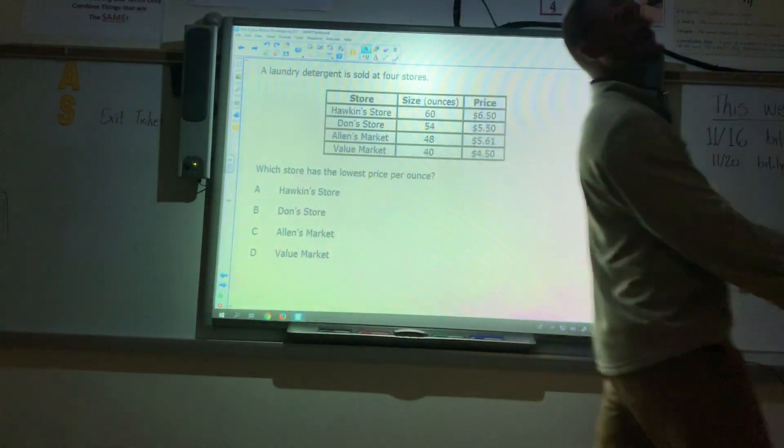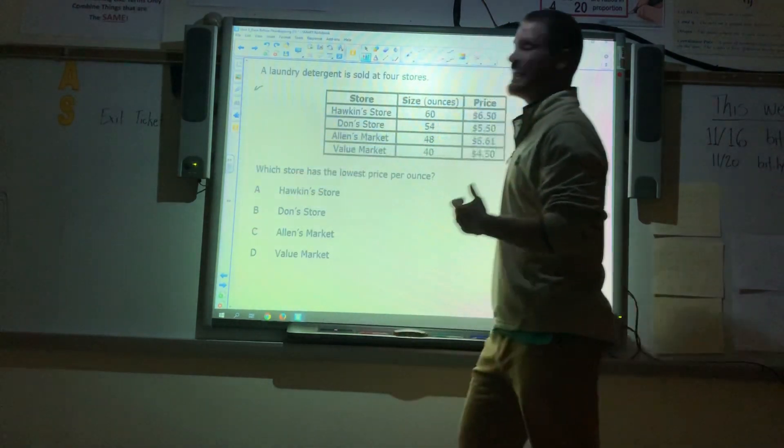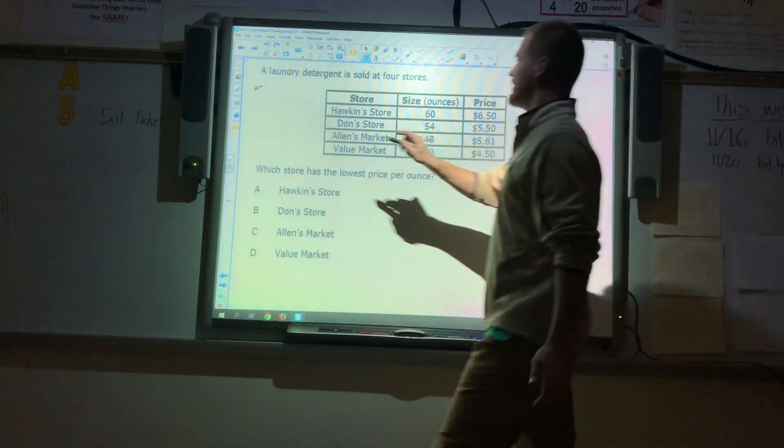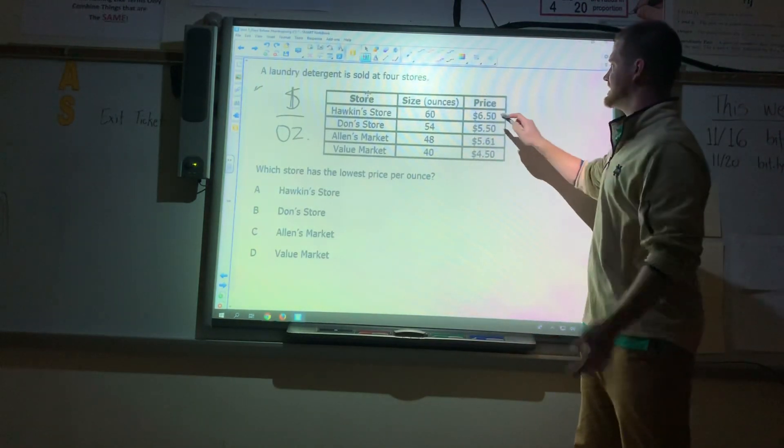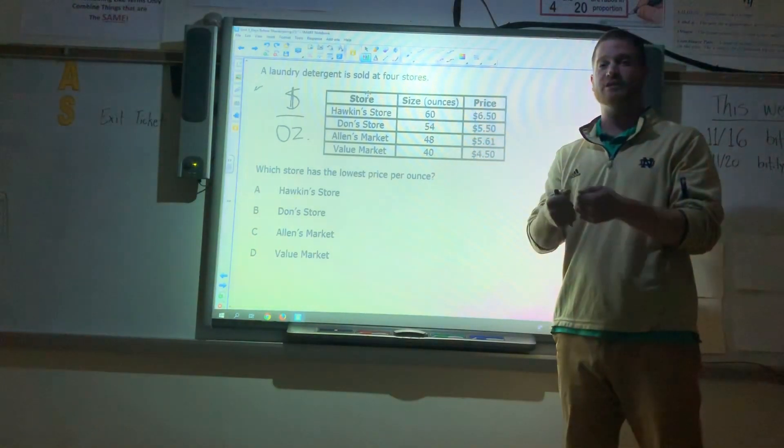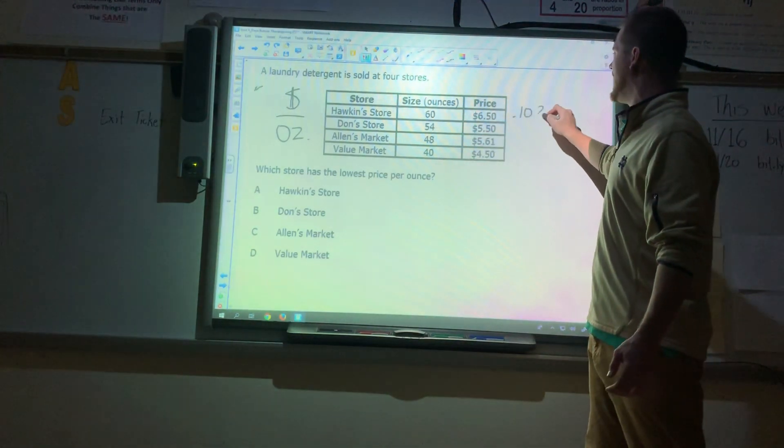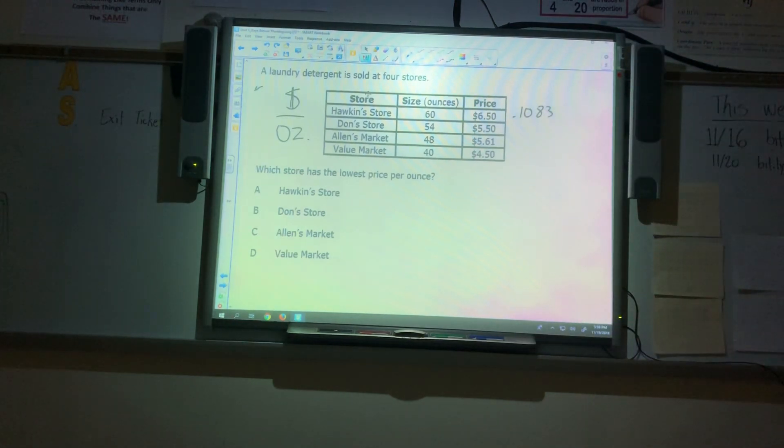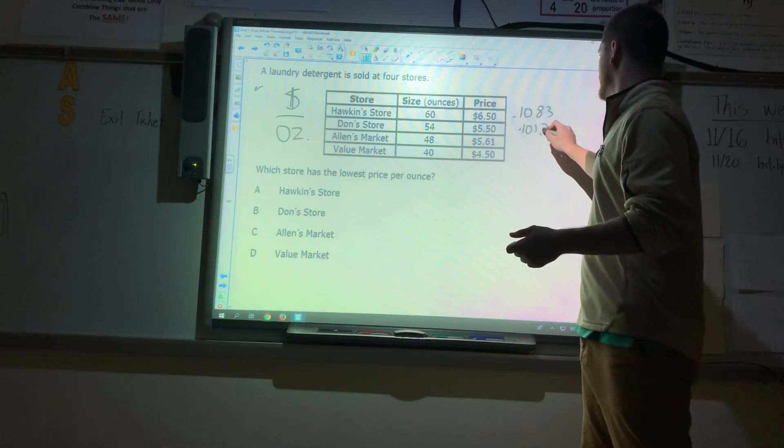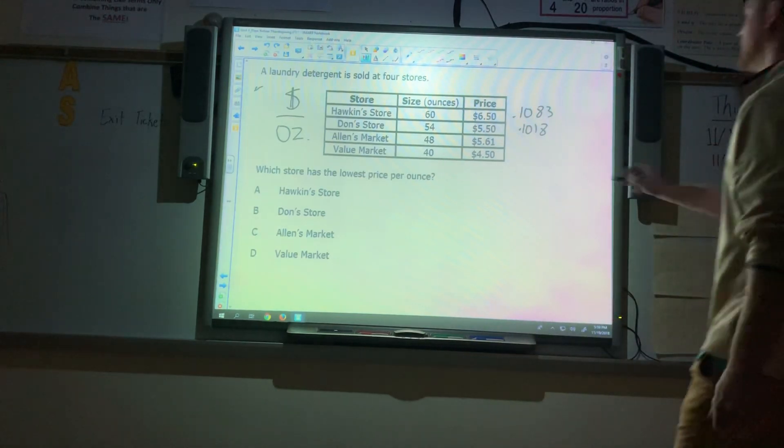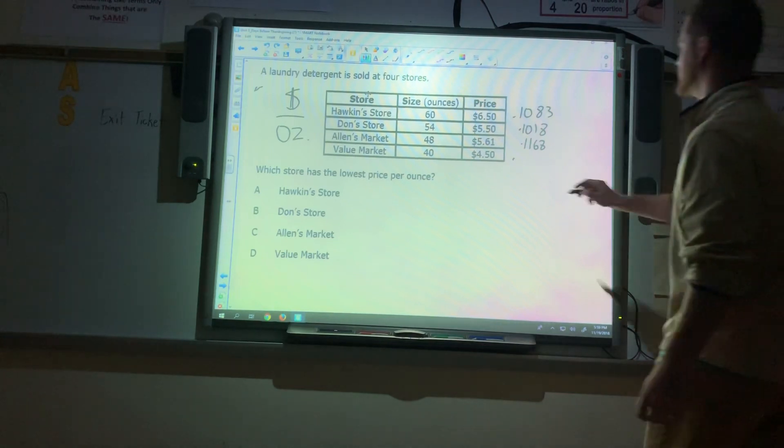Moving on to the next one. If you don't have this in your notes, you can just go ahead and follow along as I do this. This is straight off a former EOG question. It's a released EOG question, meaning that it has been on a prior 6th-grade EOG. So again, we have money over everything. This says again, it's money over ounces. So when I am doing this, when I stack these, it's just going to be the dollar amount over the ounces. So it's basically dollars divided by ounces. So the top would be 6.50 divided by 60, and we get .1083. The next one you do 5.50 divided by 54, we get .10, I believe it was 18. The next one is 5.61 divided by 48, we get .1168. Last but not least, $4.50 divided by 40 gives us .1125.